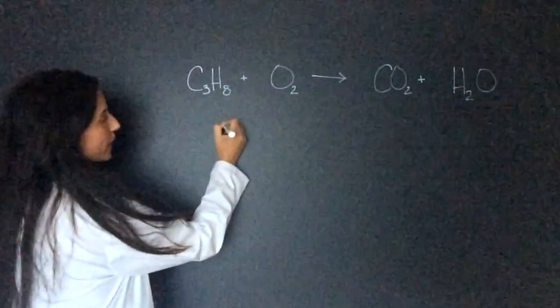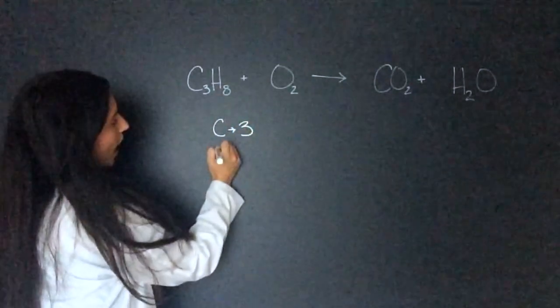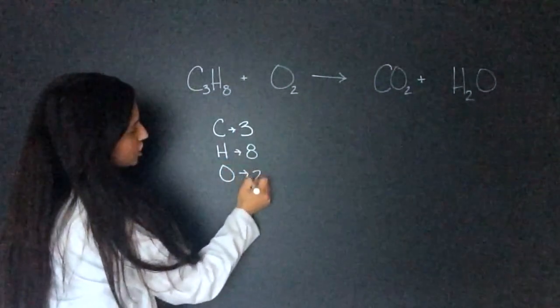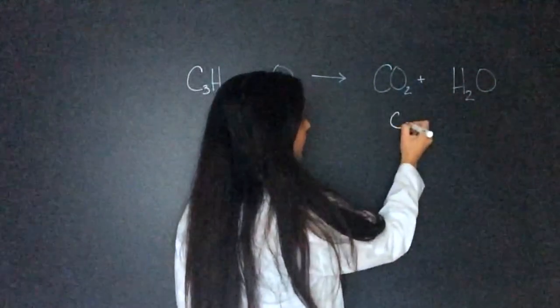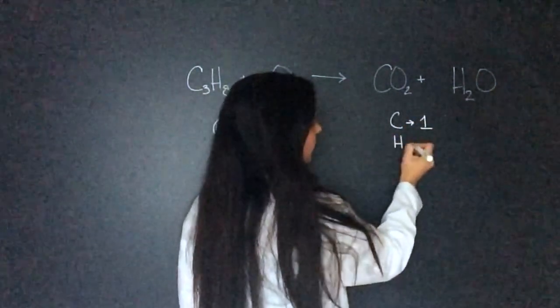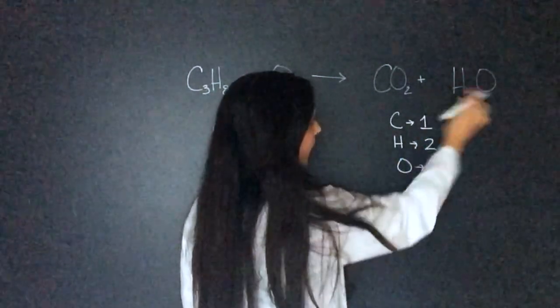So right now we have carbon at three, hydrogen at eight, and oxygen at two. Now in the products we have carbon at one, hydrogen at two, and oxygen at three.